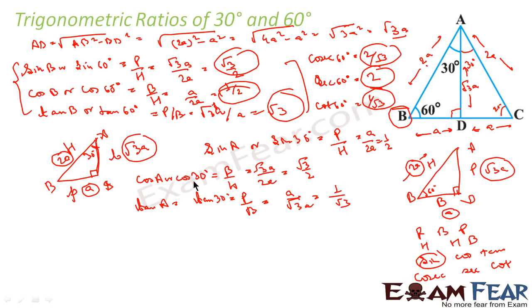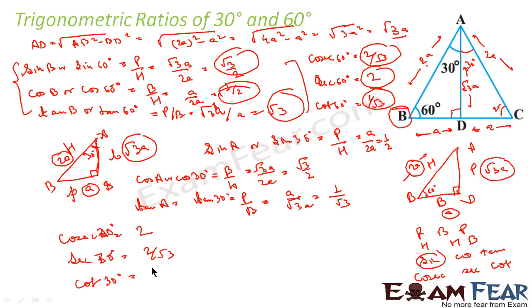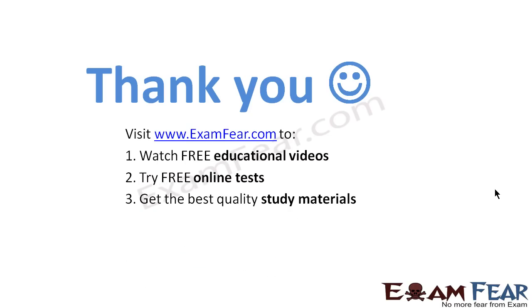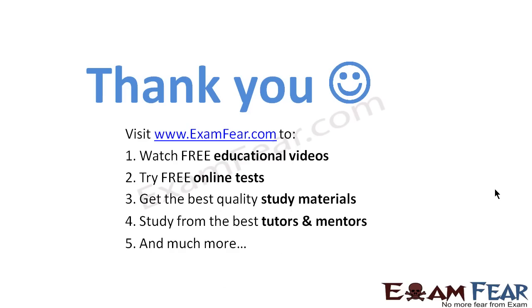Since we have sin, cos, and tan of 30°, we can find the reciprocals. Cosec 30° = 1/sin 30° = 2. Sec 30° = 1/cos 30° = 2/√3. Cot 30° = 1/tan 30° = √3. So we have all the values of sin 30°, cos 30°, tan 30°, cosec 30°, sec 30°, and cot 30°. That means we have all trigonometric ratios of 30° and 60°. Visit examfear.com to watch free educational videos, try free online tests, and get the best quality study materials. Thanks again.